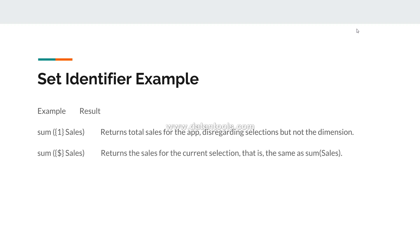The second example is Sum({$} Sales), which returns the sales for the current selection. As mentioned, even if you don't specify the dollar it will be picked up by default, so this is the same as simply writing Sum(Sales).